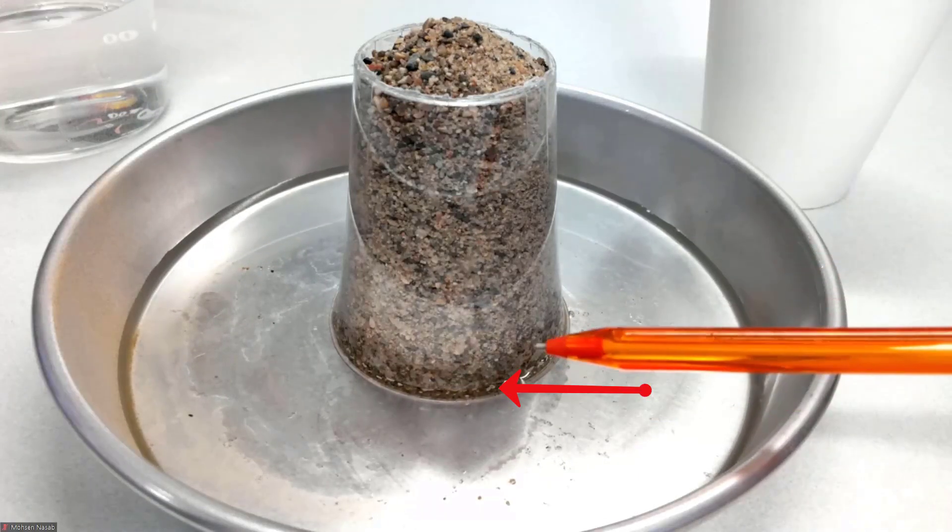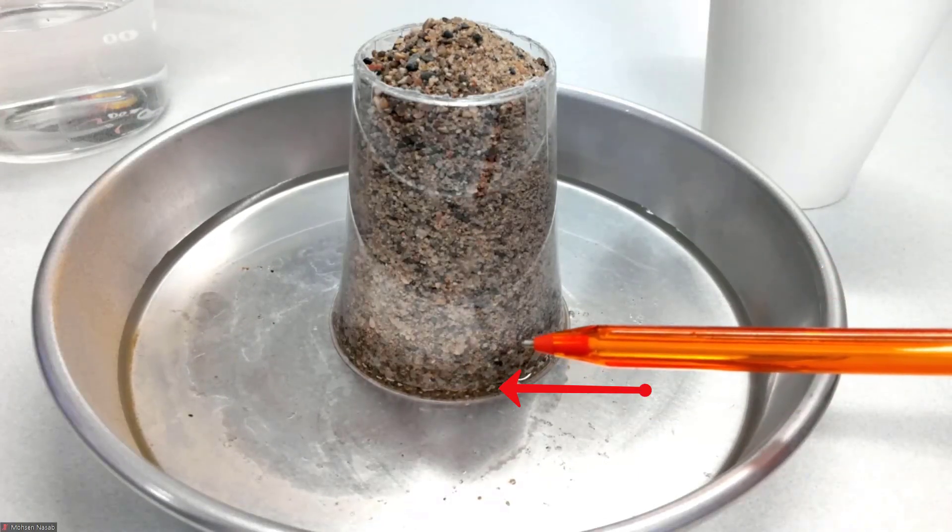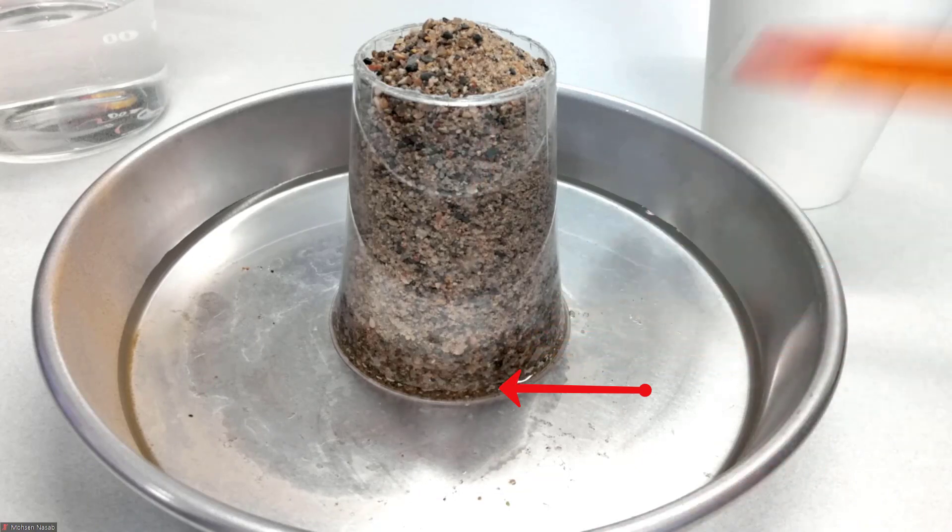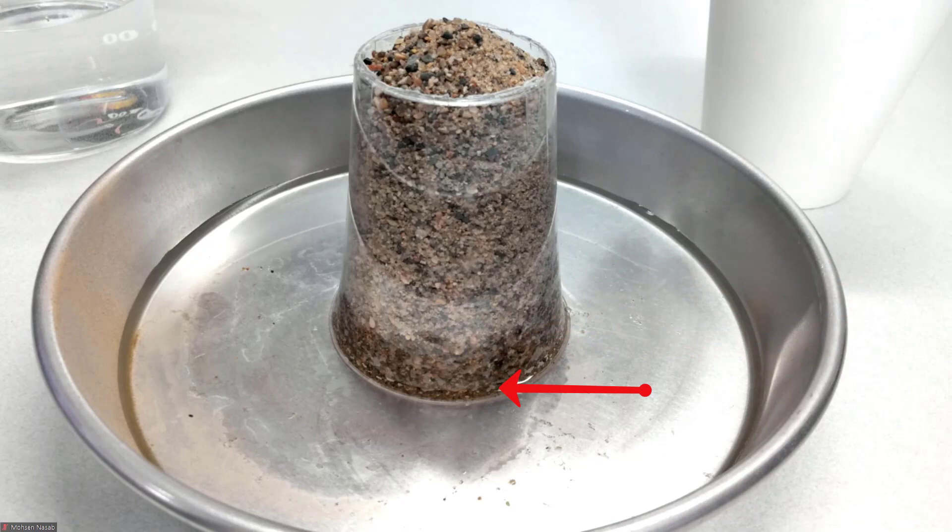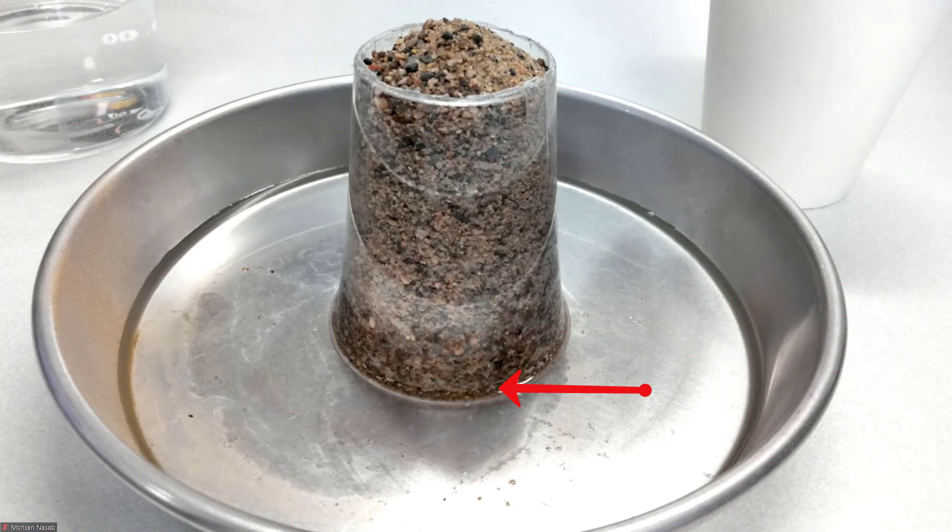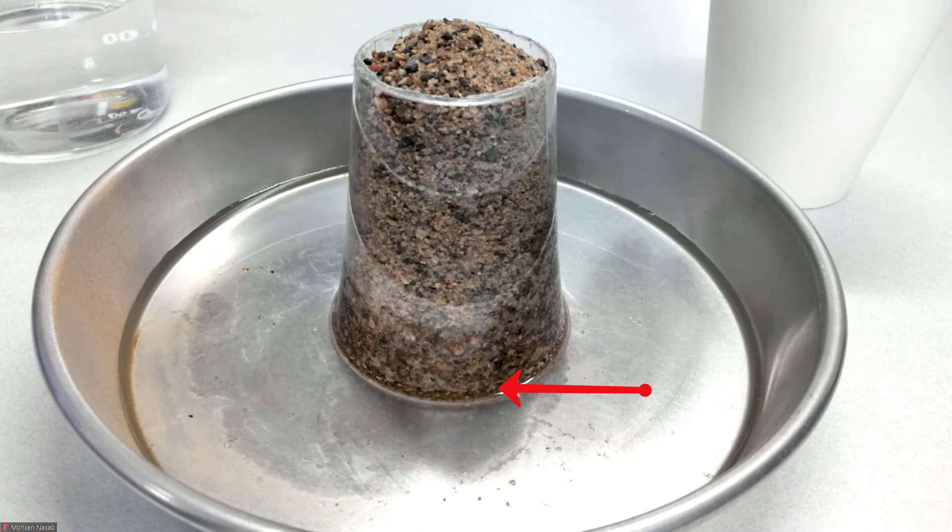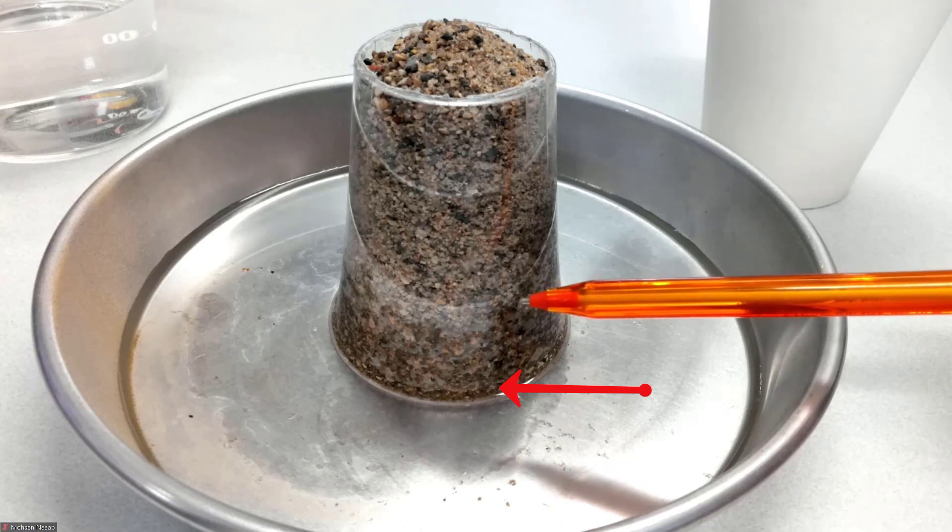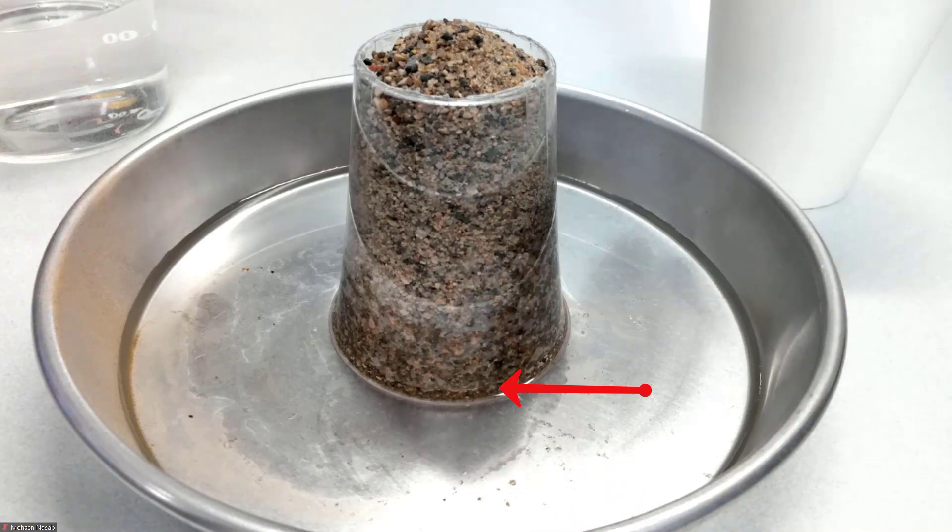As you can see over here, water is rising up in the sand slowly but surely. The reason for this is capillary action. There are lots of pores inside the pile of soil that we have over here. And because these pores are very small, water rises up in the sand. As you can see, the level is going higher and higher.